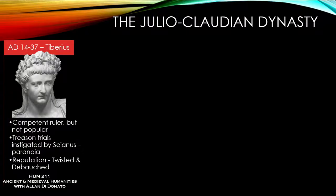Tiberius was alive at the time Jesus was crucified. He was a fairly competent man but not a very popular emperor — he didn't have the personality of an Augustus and didn't present himself as effectively. During his reign there were lots of treason trials, basically brought up at the instigation of a Praetorian leader named Sejanus, who tracked down people supposedly plotting against Tiberius and had them executed.